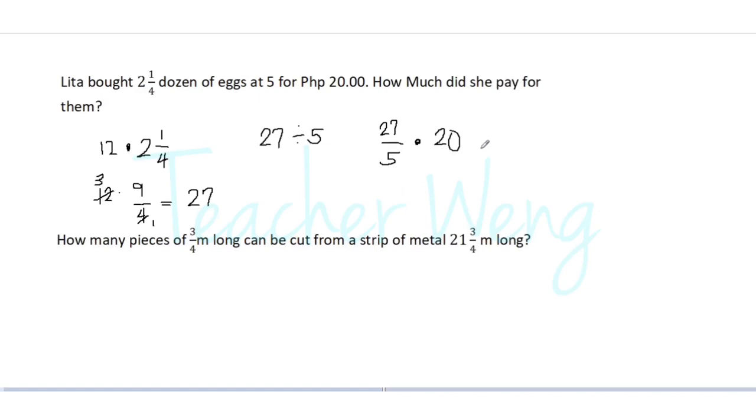So we all know that twenty is divisible by five. Twenty divided by five is four. Of course, five is divisible by itself. So we have now twenty-seven times four. Twenty-seven times four is one hundred eight.